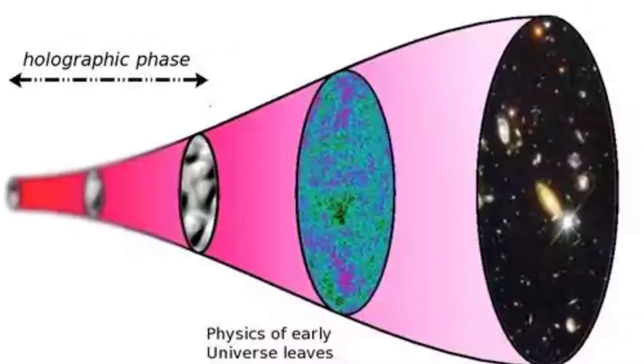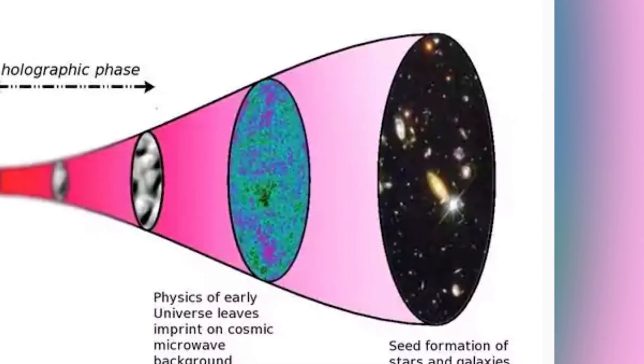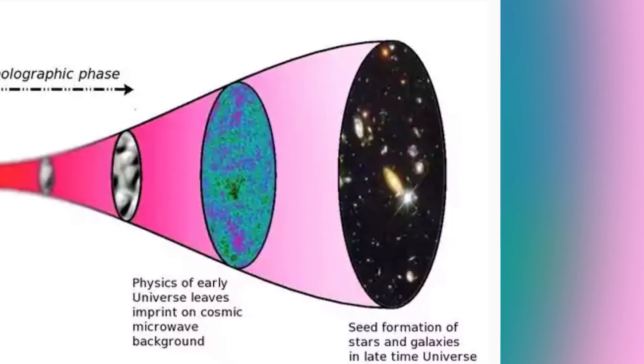Middle represents the early universe, or the cosmic microwave. In the end, it is the seed formation of the stars and galaxies, or what we see through our telescopes.